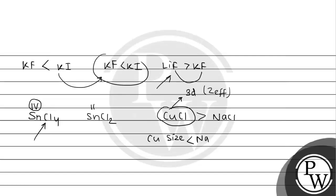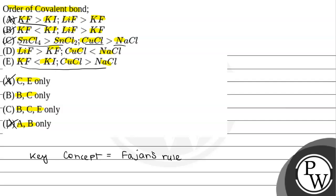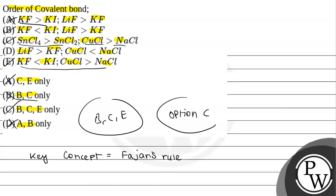Checking option E: comparing NCl — this is also consistent. So option E is definitely correct. Option B is eliminated. The correct options are B, C, and E — that is option C from the given choices. Option C is the answer to this question. Hope you understood it well. Thank you so much.